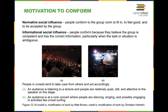There are two motivations to conform. Normative social influence is when people conform to the group to fit in, feel good, and be accepted — not because they have the right information, which is what Asch demonstrated. Informational social influence is when people conform because they actually believe the group is competent and has the correct information for the task at hand.